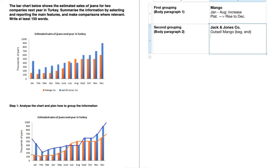For our overview paragraph, I'll use 'overall' as a great word to start. So: 'Overall, the chart predicts an upward trend in sales of jeans. Furthermore, Turkish customers are predicted to purchase more jeans from Jack and Jones company.' That's what we looked at in the end of step one — overall upward trend and more jeans for Jack and Jones. That is sufficient for our overview.